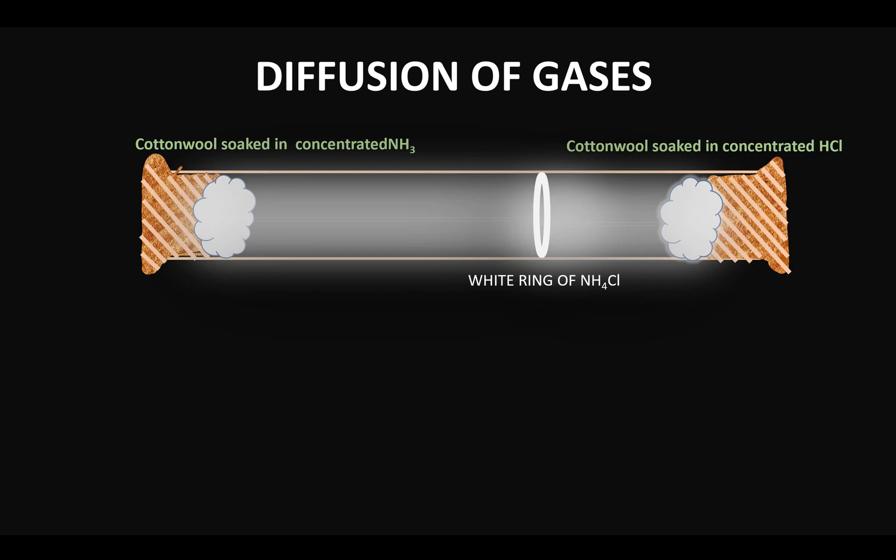Those two gases react when they meet — the gas molecules collide, they react, and then there is formation of a compound called ammonium chloride. Now, when you conduct the experiment in a laboratory you will not see anything diffusing; nothing will be visible to you.